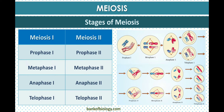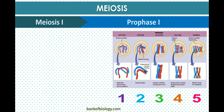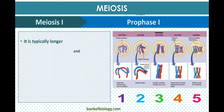The stages of meiosis include meiosis one and meiosis two. In meiosis one, prophase one is the longest and most complex phase. It is divided into five sub-stages based on chromosome behavior.